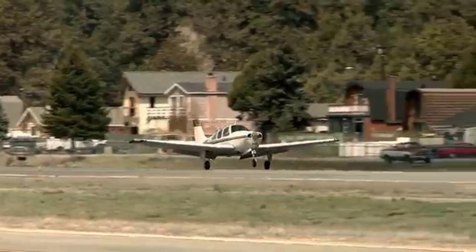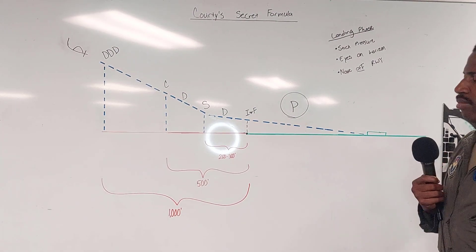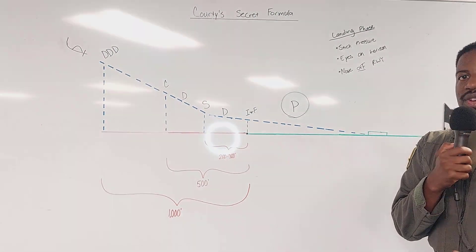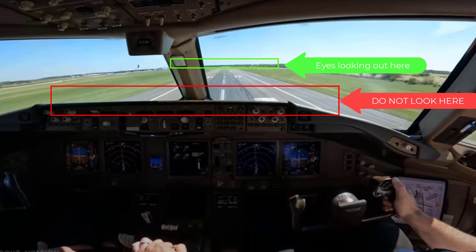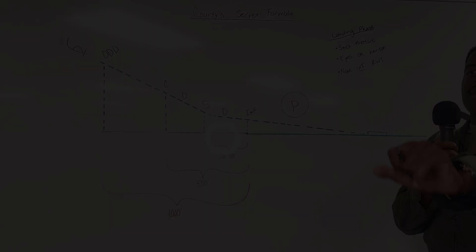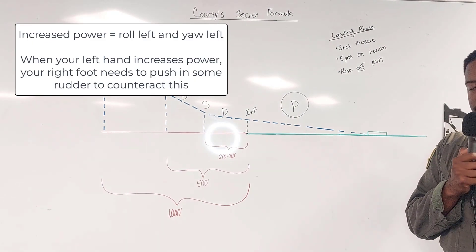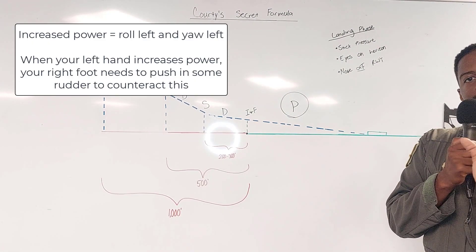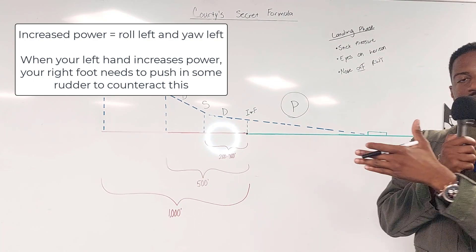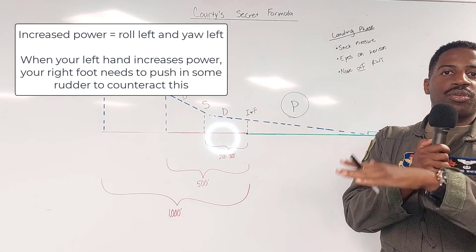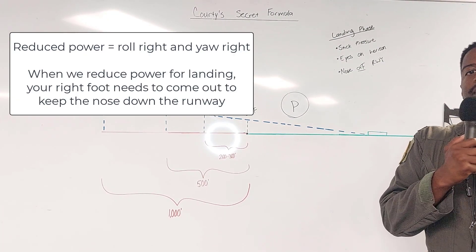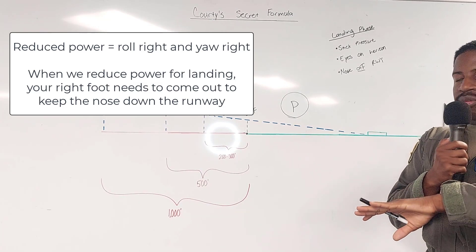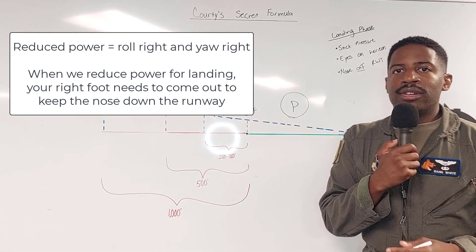The next thing is get your eyes on the horizon. Once we get into that flare, I'm looking all the way out on the horizon. The most important part of that is that in the T-6, when I push up the power, my left hand and my right foot is connected. I'm going to push up the power, I'll need to compensate with some right rudder because the nose is going to want to pull off to the left. Same thing happens when we go to idle. When I go to idle, my nose is going to want to peel off to the right.